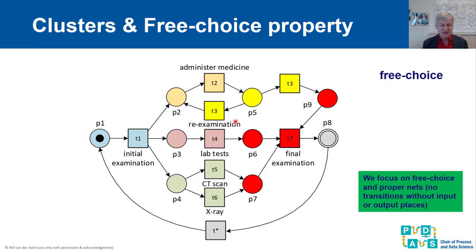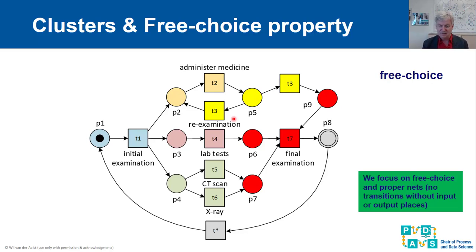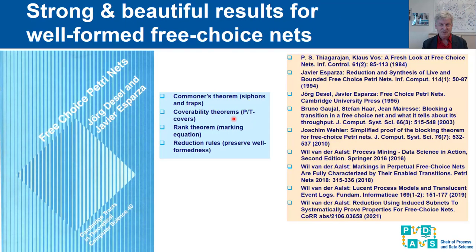We will focus on free choice nets with a syntactical limitation. We will not require the net to be short-circuited or strongly connected. However, we require every transition to have at least one input arc and one output arc — this is what we call proper. Proper means every transition has at least one input and at least one output.